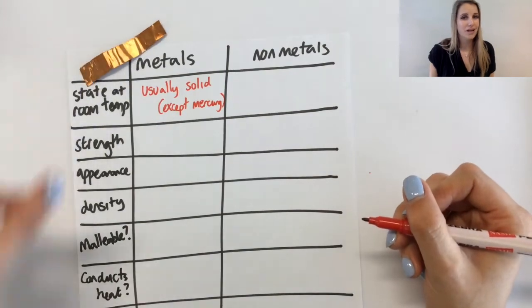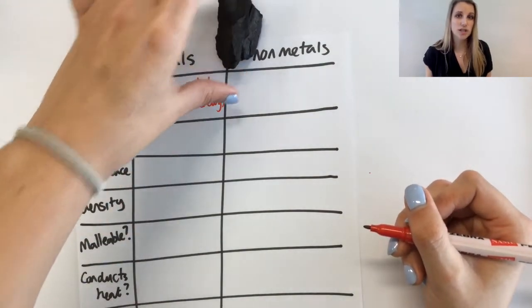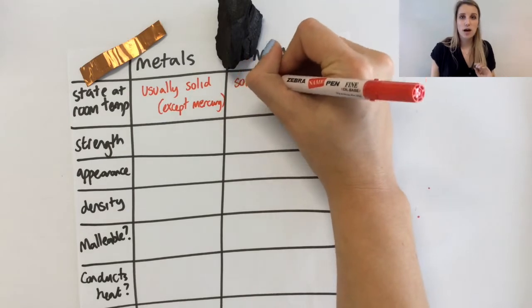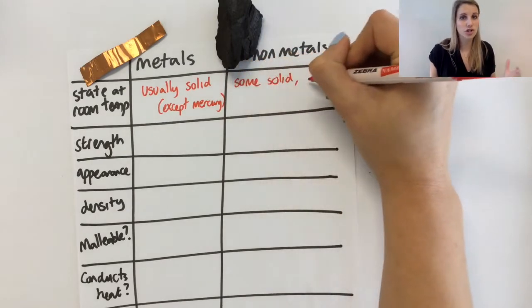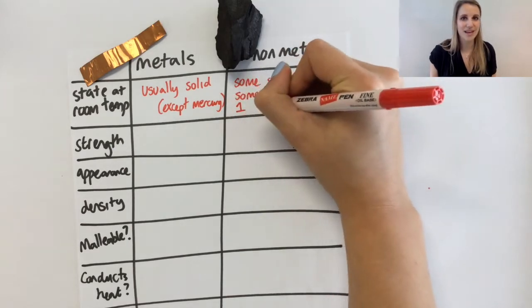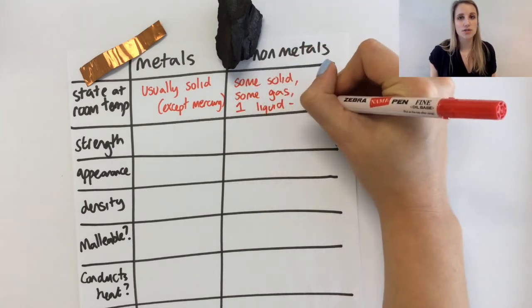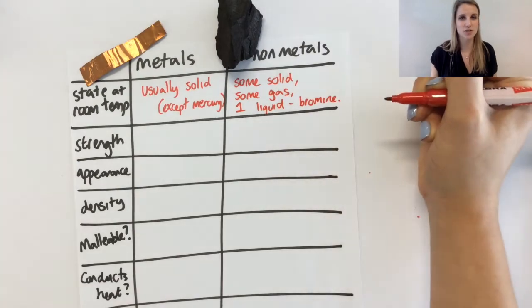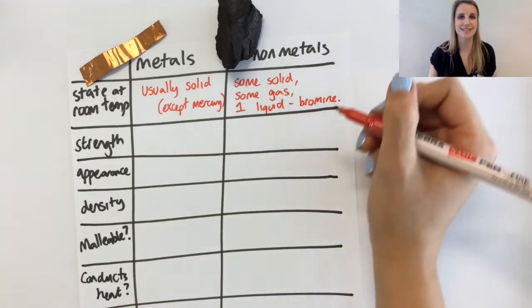Non-metals are a little bit more difficult. Some are solid like the carbon I have here, some are gases like oxygen or hydrogen. And some, bromine, just the one, is a liquid. So you can't really tell the difference between a metal and a non-metal just using its state.